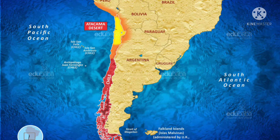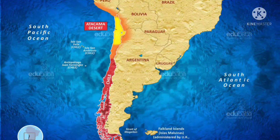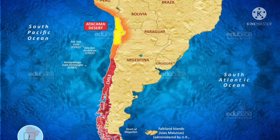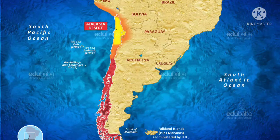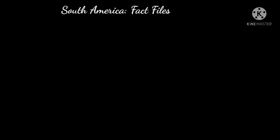The Atacama Desert, which is the world's driest desert, also lies in these coastal plains along the coast of the northern part of Chile. As you can see on this map colored in yellow, this is the Atacama Desert. This is all about the western coastal plain — hope it is clear to everyone.